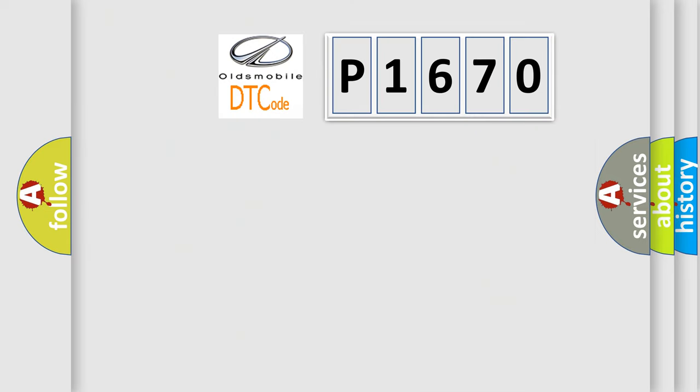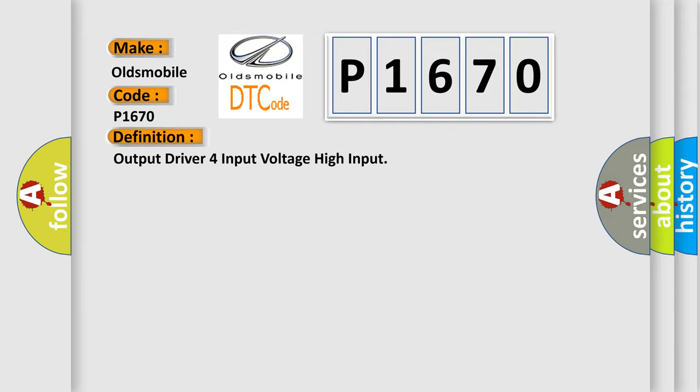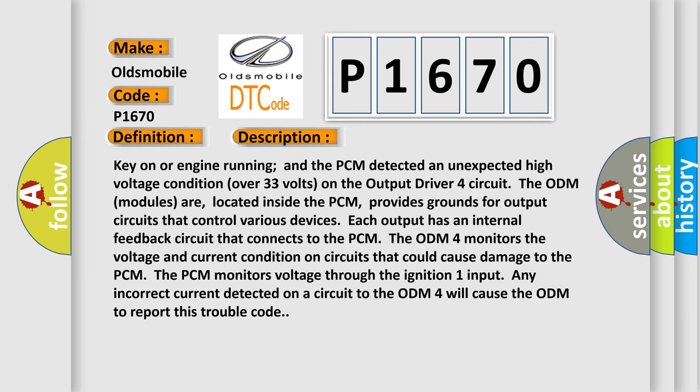What does the diagnostic trouble code P1670 interpret specifically for Oldsmobile car manufacturers? The basic definition is: Output Driver 4 Input Voltage High Input. This is a short description of this DTC code: with key on or engine running, the PCM detected an unexpected high voltage condition over 33 volts on the output driver 4 circuit. The ODM modules, located inside the PCM, provide grounds for output circuits that control various devices. Each output has an internal feedback circuit that connects to the PCM.